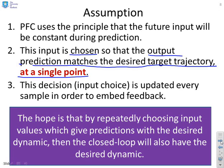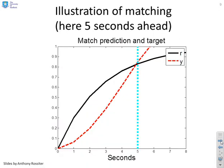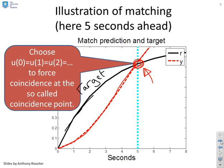So here's an example of what we're trying to do. You'll see this black line here. This is the target. So in our head, this is roughly what we want the system to do. And what we're going to do is choose the input so that our actual output response, which is this red line, matches the target at a specified point. So our hope is that by forcing this matching, it will make the output converge at roughly the same rate as the target. So here we're going to try and find a fixed value of input, u0 equals u1 equals u2 and so on, to force coincidence at the so-called coincidence point.